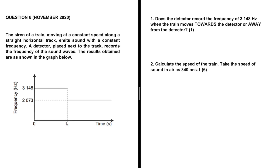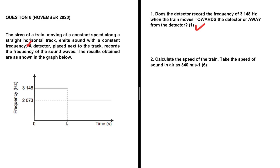Does the detector record the frequency of 3148 hertz when the train moves towards the detector or away from the detector? That is the first question. The siren of a train moving at a constant speed along a straight horizontal track emits sound with a constant frequency. The train is our sound source, and a detector placed next to the track records the frequency of the sound waves. The results are shown in the graph below, which is different from the graph we had previously.